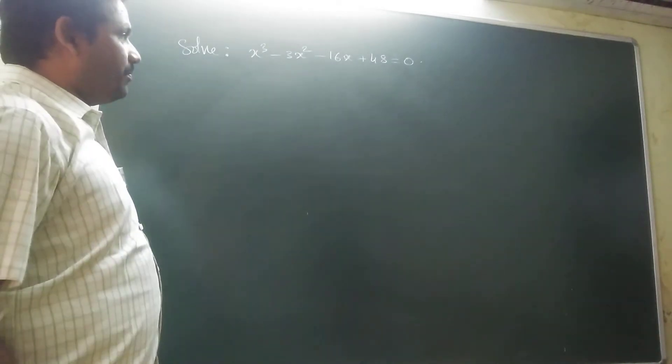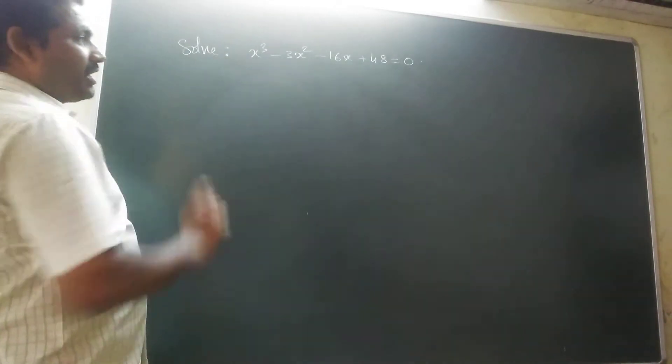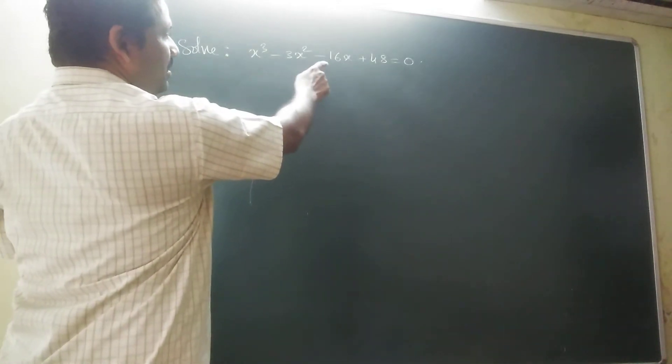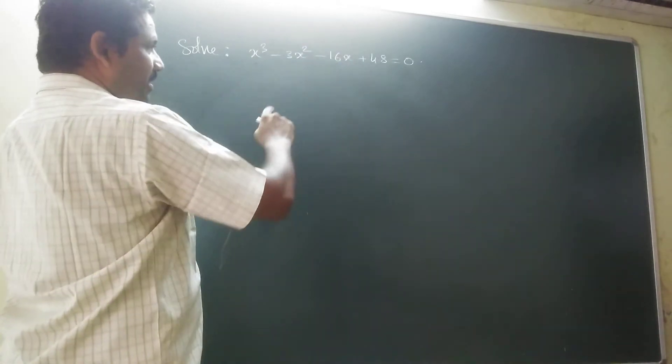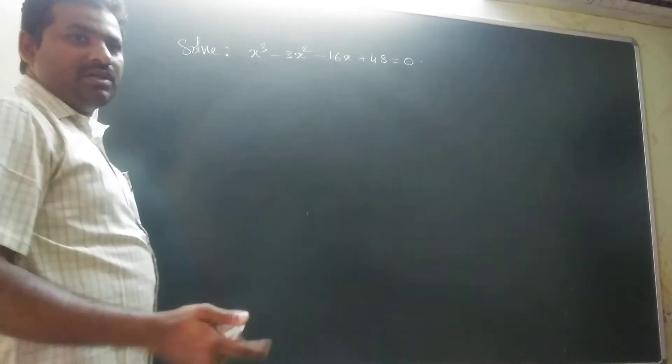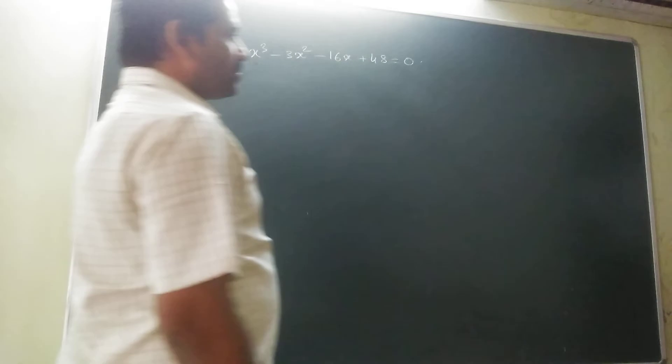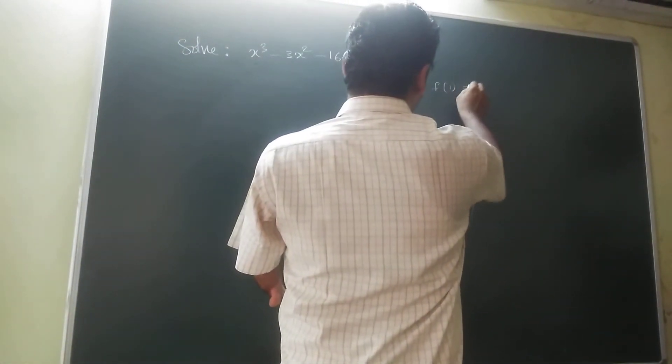So by putting 1, put x equal to 1: 1 minus 3 minus 16 plus 48. 1 plus 48 is 49, 49 minus 19, that is not 0. So f of 1 not equal to 0.